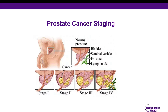Traditionally, prostate cancer staging has ranged from stage one to stage four. Stage one typically refers to prostate cancer that is confined to the prostate, and in this stage a variety of treatments may be offered, including active surveillance or observation. Stage two prostate cancer demonstrates more extensive disease and can encompass both lobes or halves of the prostate, and this stage may incorporate more elevated PSA values or higher Gleason scores.